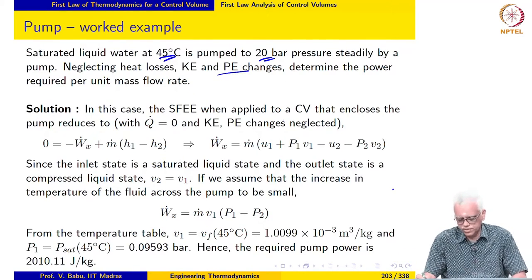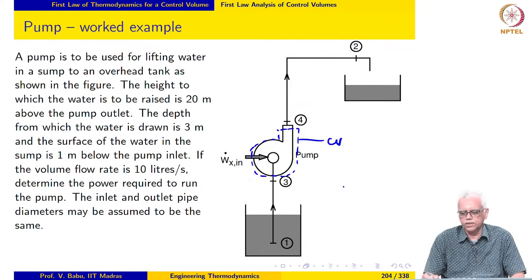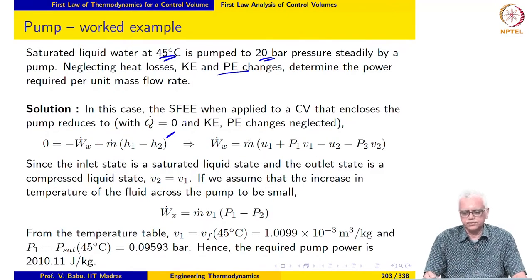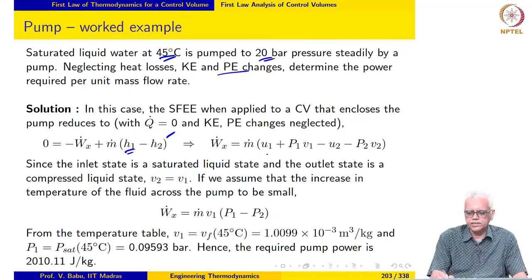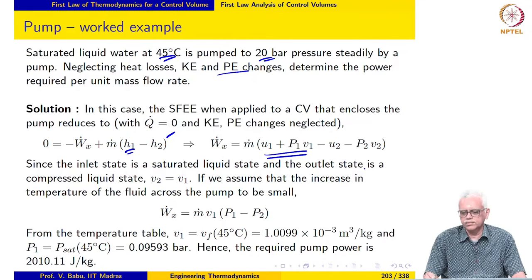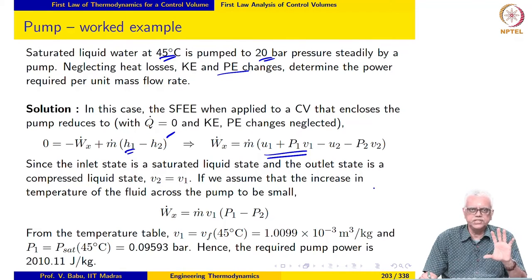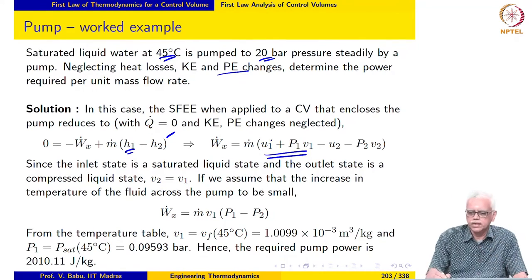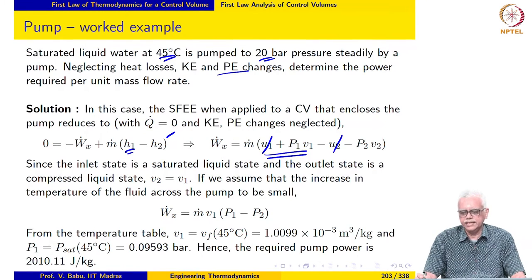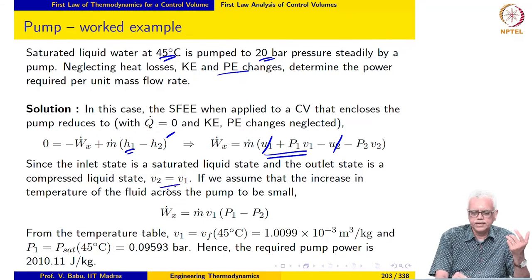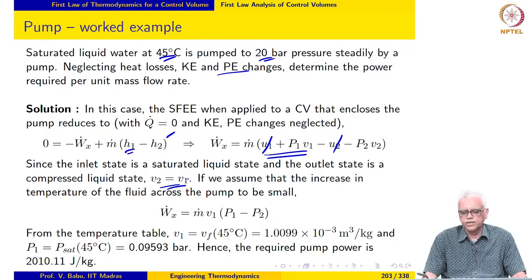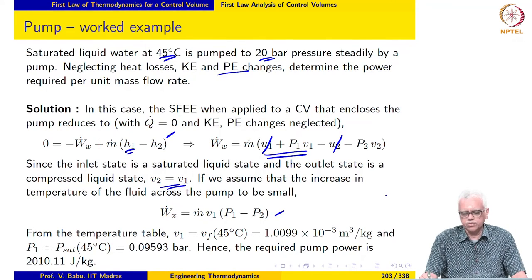If you apply the steady flow energy equation to this control volume, with Q-dot equal to 0 and KE and PE changes neglected, the equation reduces to an expression involving H1 and H2. If I expand the enthalpy term, I may write H1 as U1 plus P1V1 and H2 as U2 plus P2V2. Since there is no substantial change in the temperature of the liquid as it goes through the pump, U1 is approximately taken to be equal to U2. Furthermore, since it is a liquid it is practically incompressible, so we may also take V2 equal to V1. With this simplification, the equation reduces to Wx-dot equal to m-dot times V1 times (P1 minus P2).